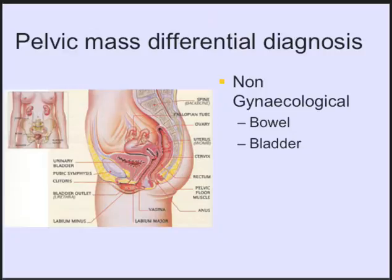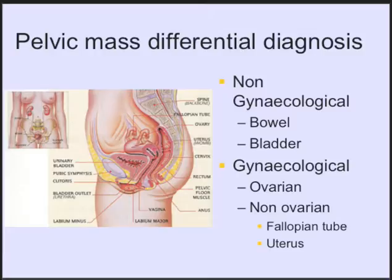The differential diagnosis of pelvic mass. Here we see a diagram. Apart from uterus, fallopian tubes and ovaries — the gynecological structures — we have to be mindful that bowel and bladder are also located in the pelvic area. So it's important in the differential diagnosis to be mindful of bowel and bladder issues. Gynecologically, the key component of today's lecture is ovarian, but also non-ovarian structures such as the fallopian tube and the uterus itself.